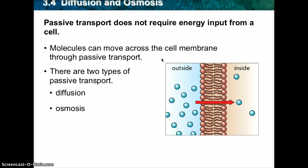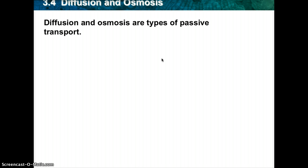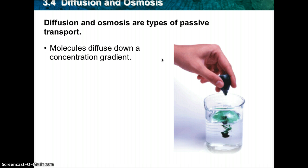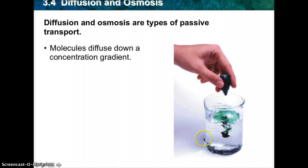Diffusion is the actual act of going from a high concentration to a low concentration — it goes down the concentration gradient. As you can see with the dropper here in the picture, the dye is very concentrated, and when these drops go into a beaker of water there's obviously not a lot of dye. So what happens is it spreads out, and if we had another picture you'd see it as a very faint green.